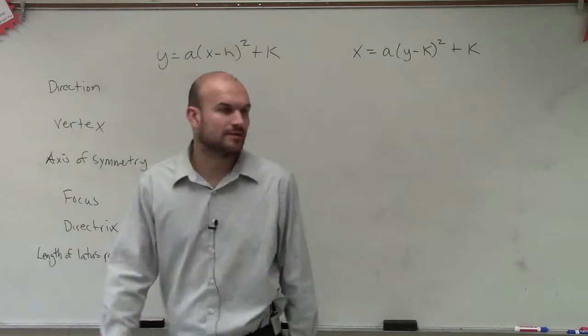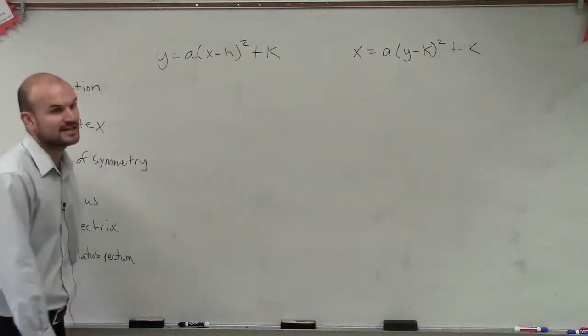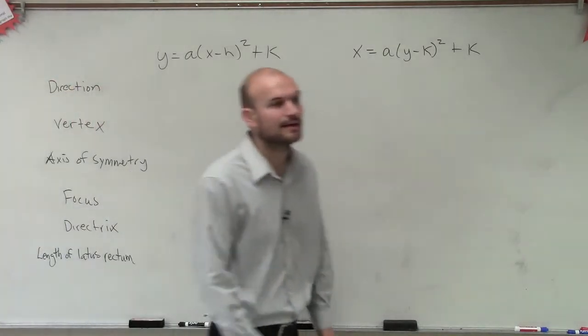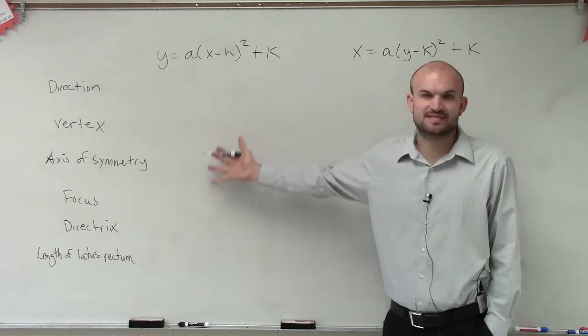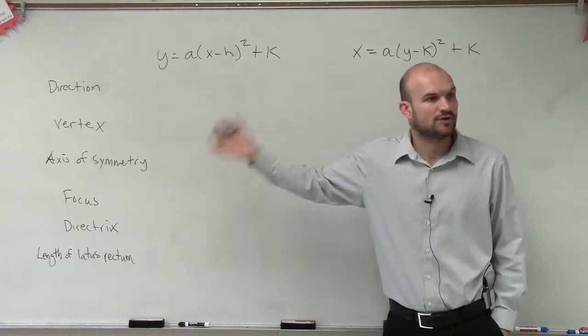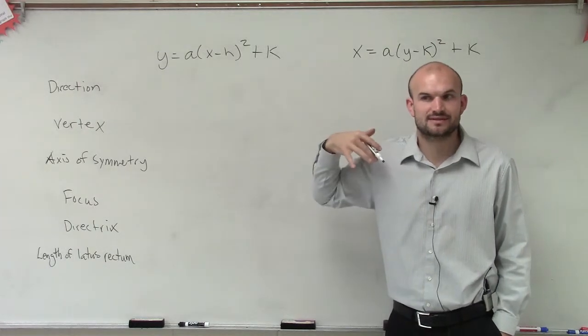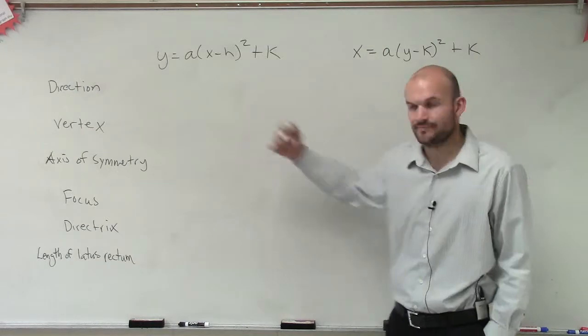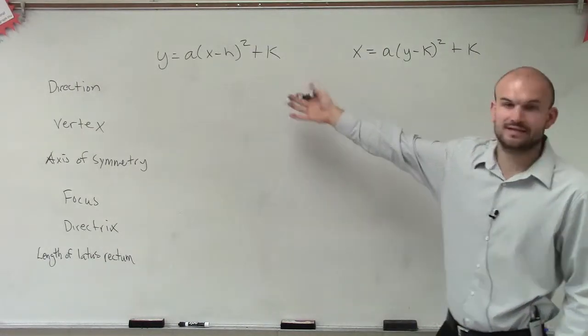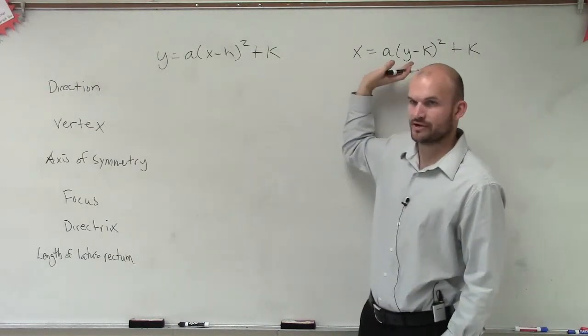Okay, so we have y equals a times x minus h squared plus k, alright? So what I'm going to do is I'm going to kind of explain all this with the graph, which hopefully will make a little bit more sense. And then what I'll do is I'll go ahead and explain the other one with the graph. So let's go ahead and take a look at, let's not worry about this equation right now, okay?